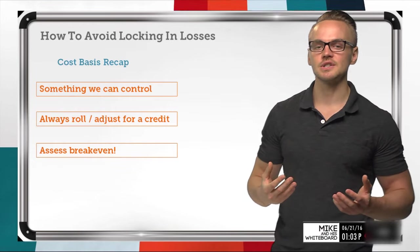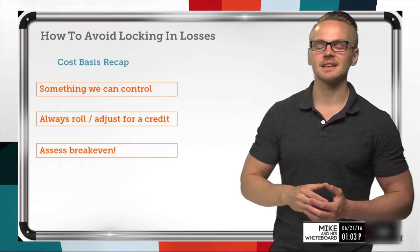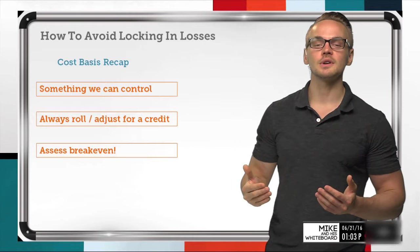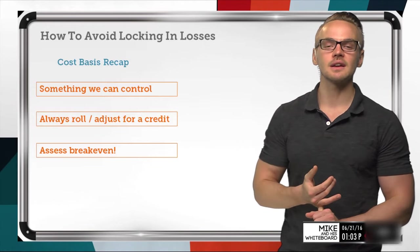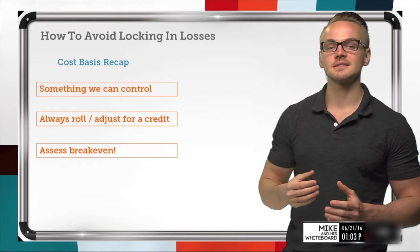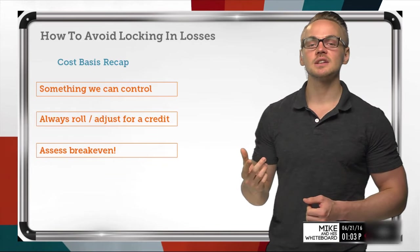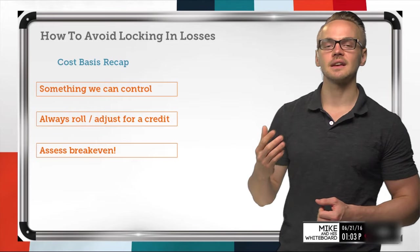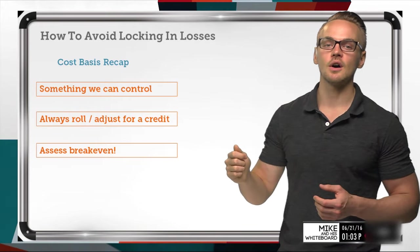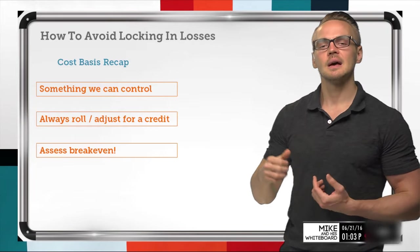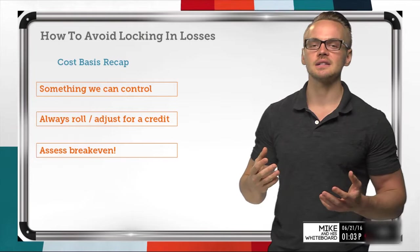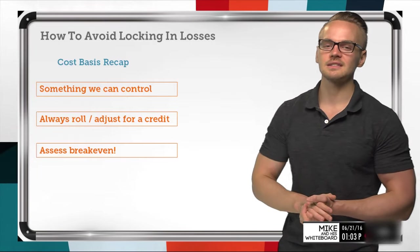To avoid locking in losses, we need to assess and focus on the break-even point. Today we'll walk through selling a naked put, letting it go in the money, getting assigned on shares, and then continuing to reduce our basis by selling a covered call against those shares. We'll analyze a few different scenarios and weigh the pros and cons of each.